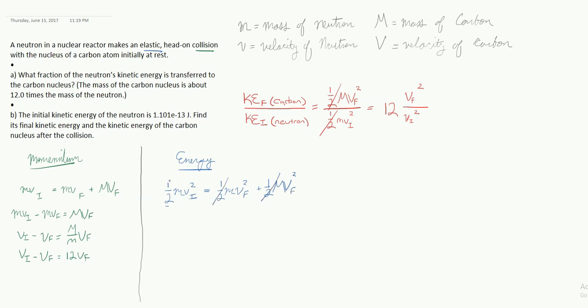So the one halves go away, and I don't know if you can see this, but what I'm going to basically do is the same thing I did over here, only this time it's going to get me v initial squared minus v final squared is equal to 12 V final squared.